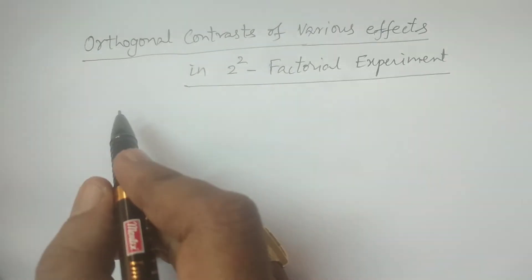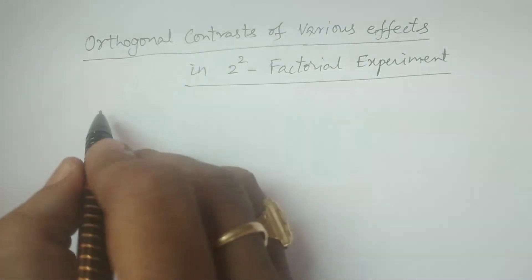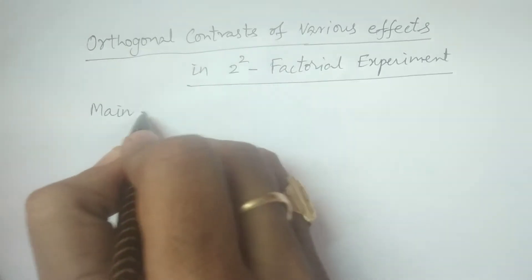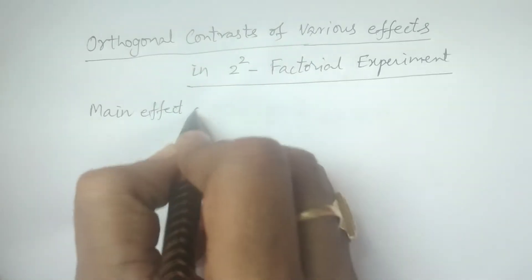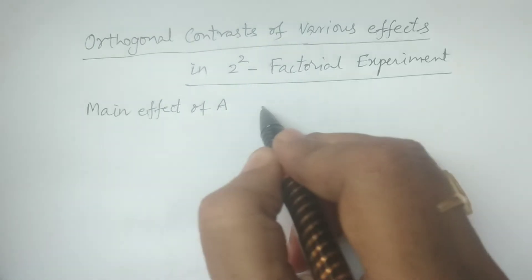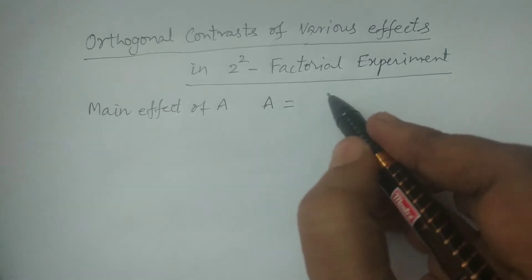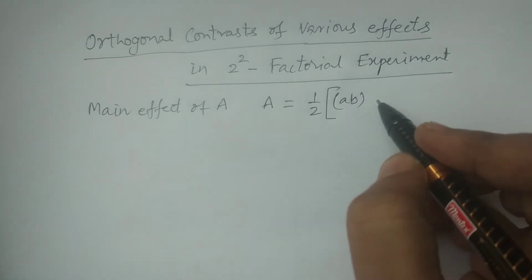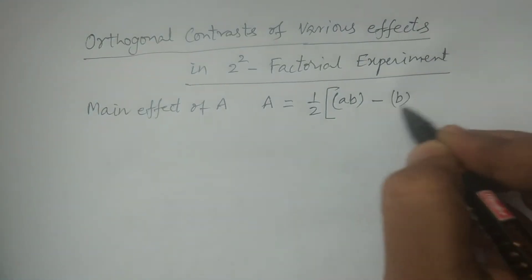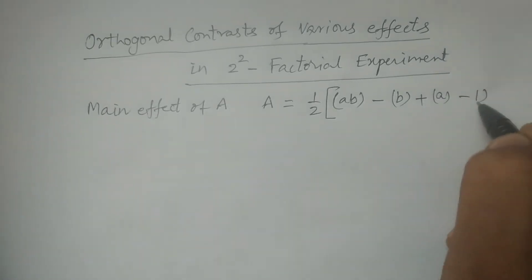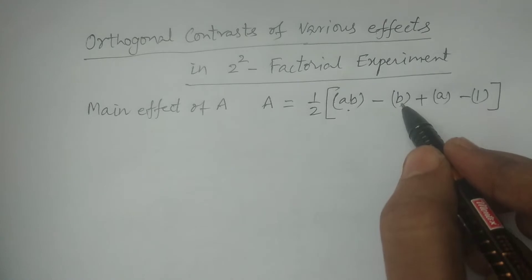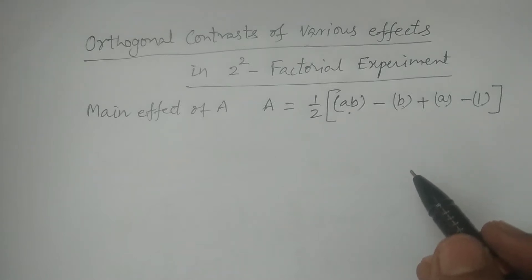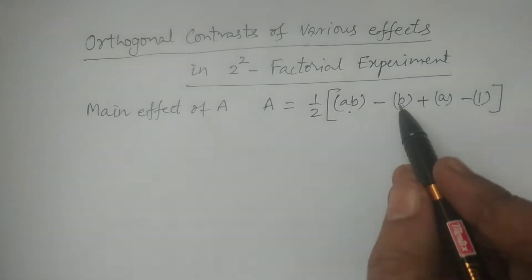So first, in the two-squared factorial experimental design, I write the effects. The main effect of A is generally written as: A = (1/2)[AB - B + A - 1]. These are the four treatments: 1, A, B, AB.